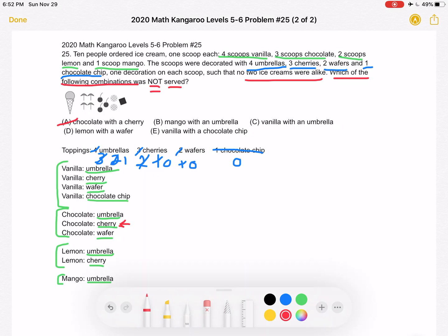For B, we have mango with an umbrella. It's right here. Again, not the right answer. C, vanilla with an umbrella. Well, for vanilla, we have each topping, including the umbrella right over here. So again, it's not C.